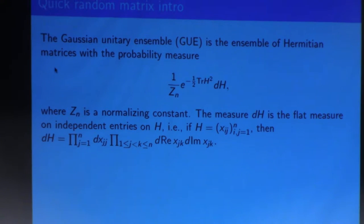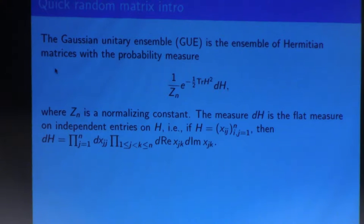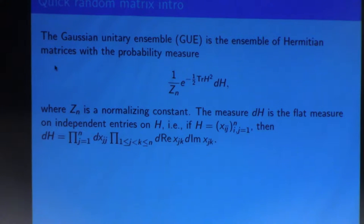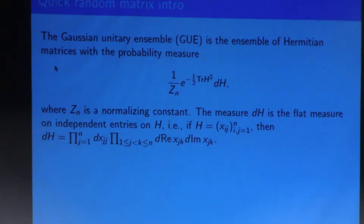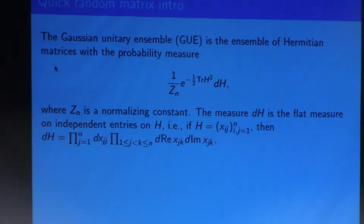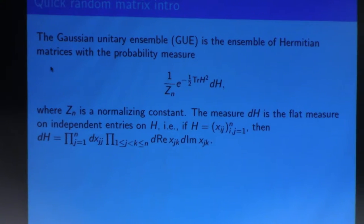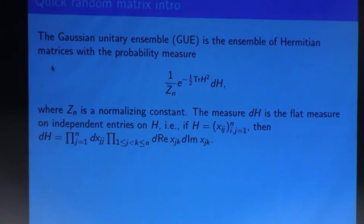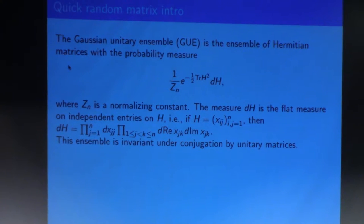Because it's a finite temperature version of the GUE, I will first introduce the GUE. Since we're on day five of a random matrices conference, it's maybe not necessary, but — okay, this is the Gaussian Unitary Ensemble of Hermitian matrices. It can be written as a measure on Hermitian matrices with a flat measure on the entries and a Gaussian term involving the trace of the square of the matrix.